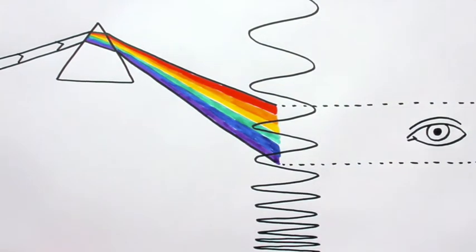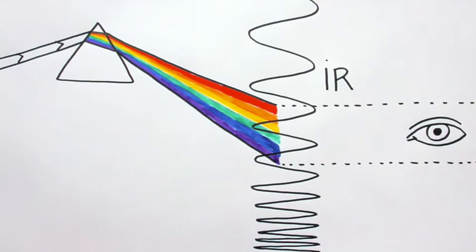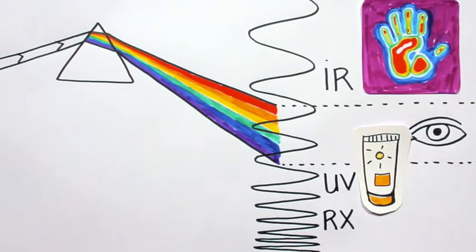But it also contains invisible light, such as infrareds among the lowest energies, and ultraviolets and x-rays among the highest ones.